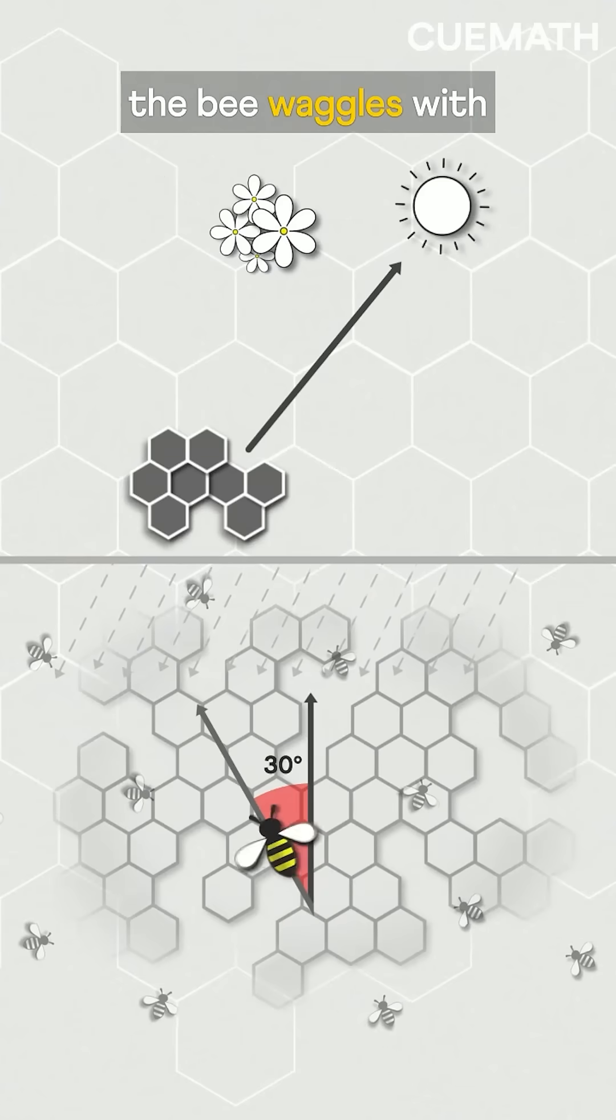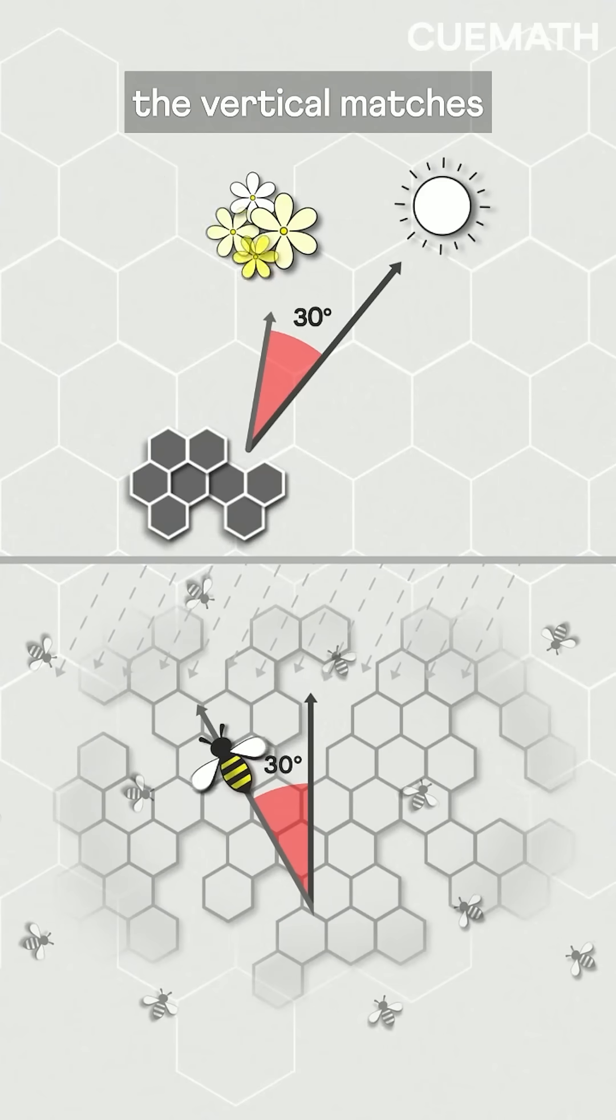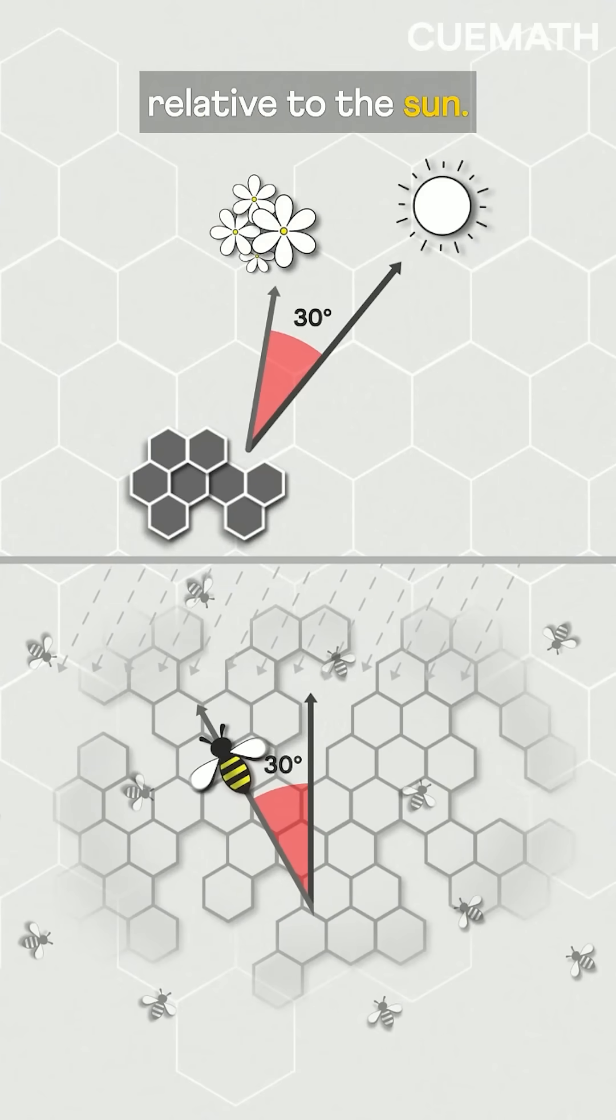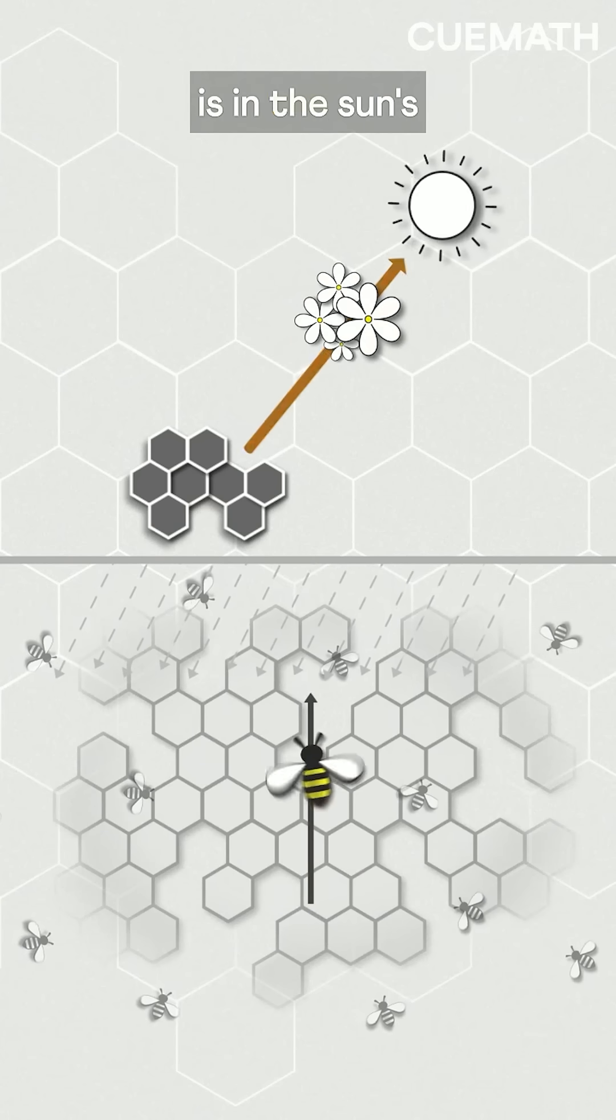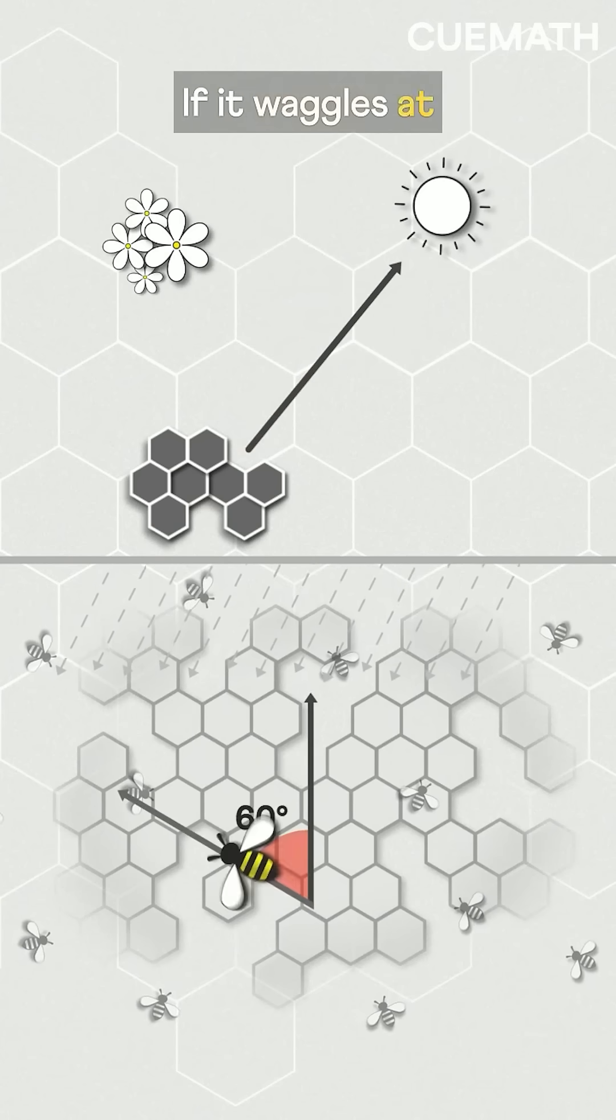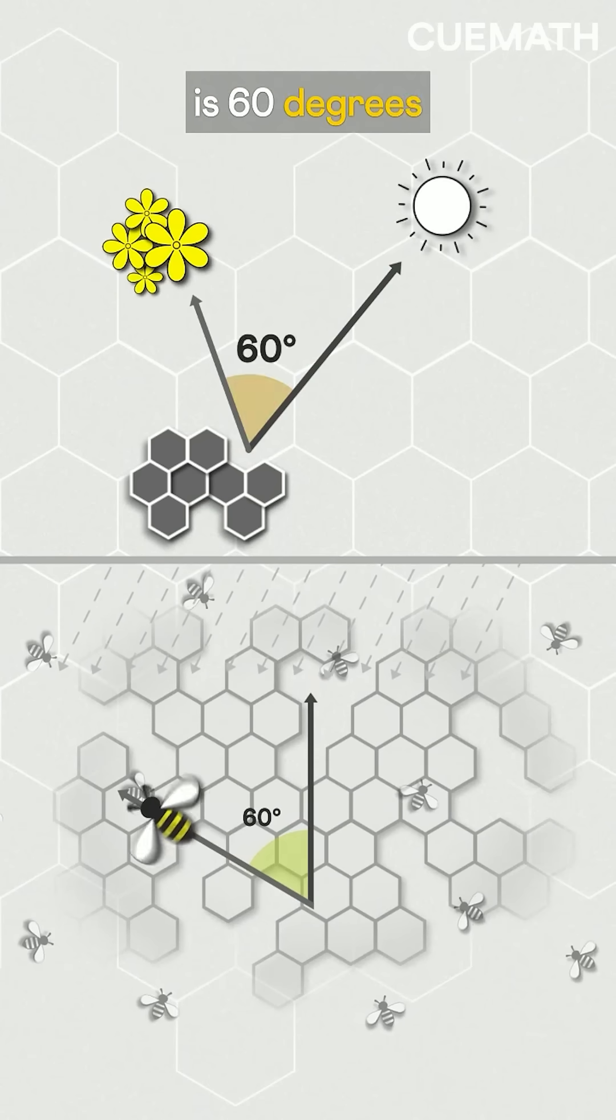The angle at which the bee waggles with the vertical matches the flower's position relative to the sun. So if it waggles straight up, the food is in the sun's direction. If it waggles at 60 degrees, the food is 60 degrees from the sun.